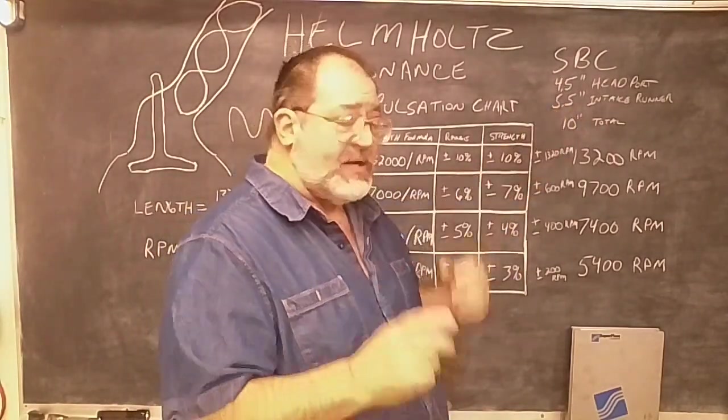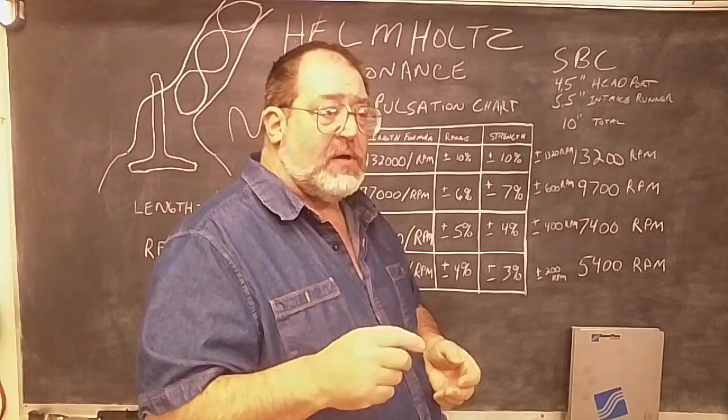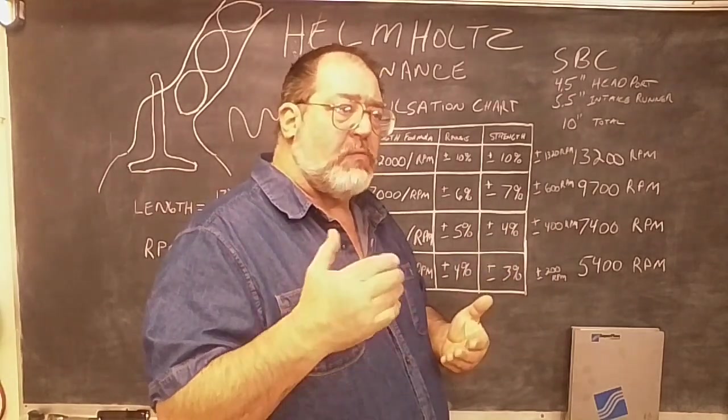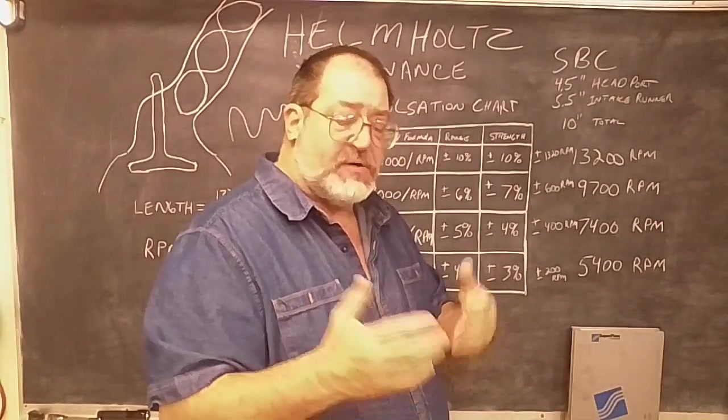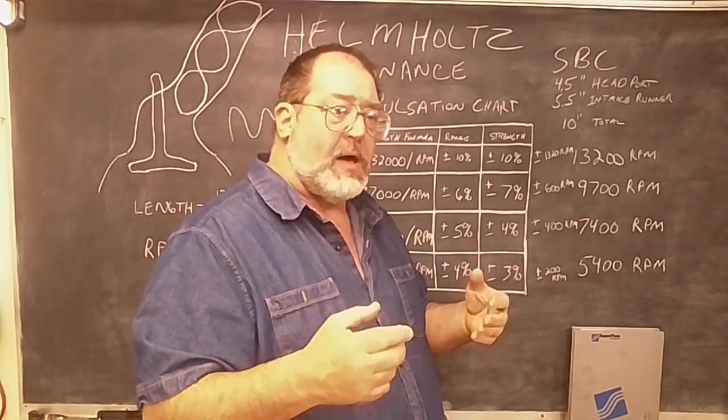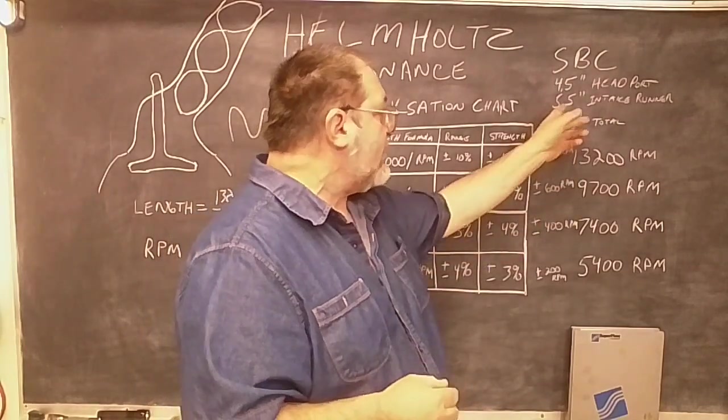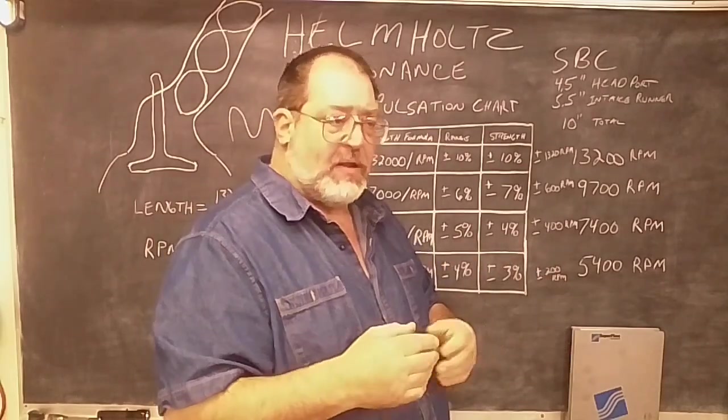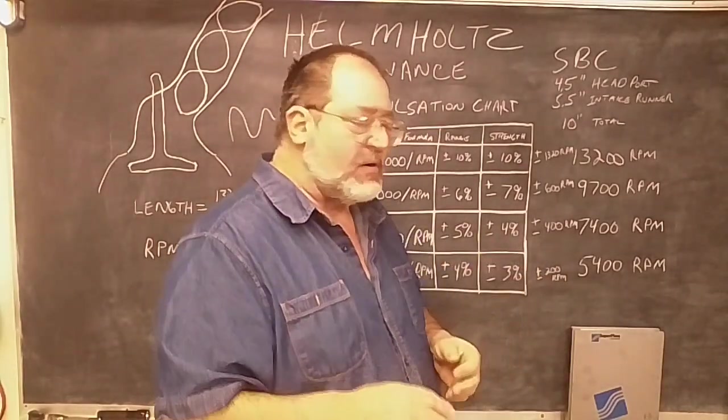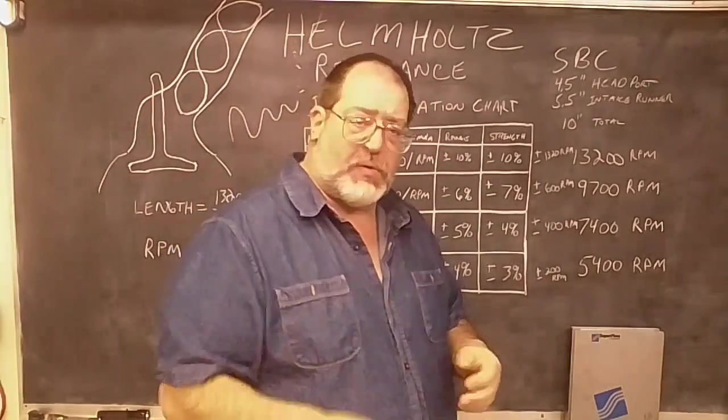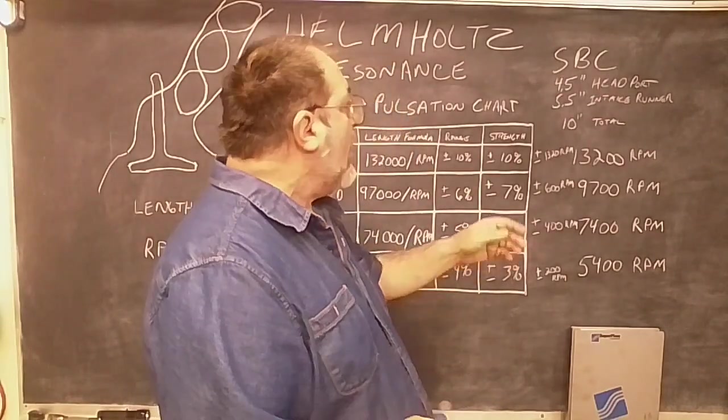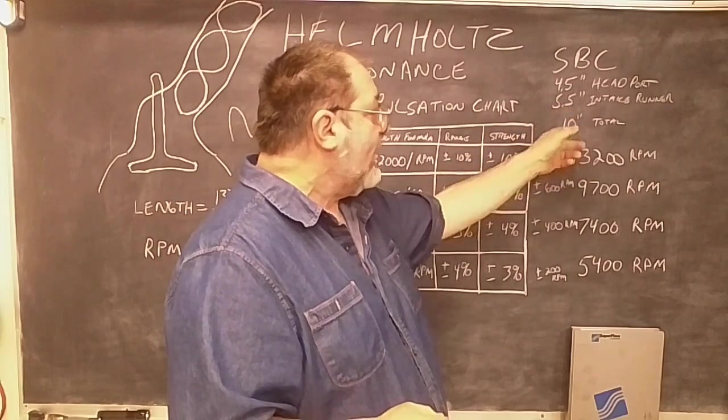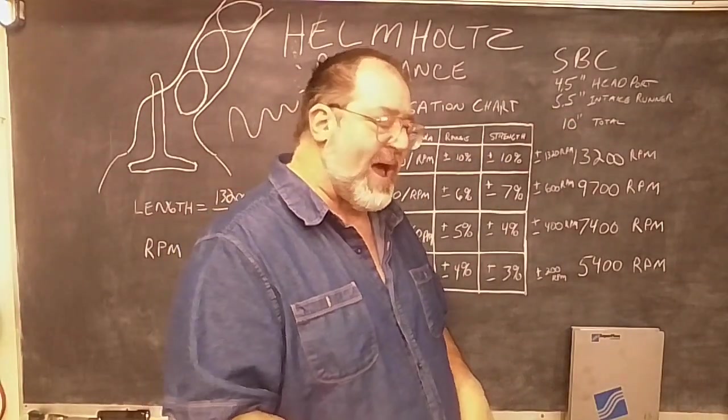And then, I measured a bunch of intakes and just got a general idea. On a regular single plane, center mounted, carbureted intake, you're generally talking about five and a half inches or so. Now, of course, a dual plane will be a little longer. But, you can take a look at what you've got and run some numbers and see what you think. But, this made it easy because four and a half plus five and a half equals ten inches. That makes an easy number for us to do math.